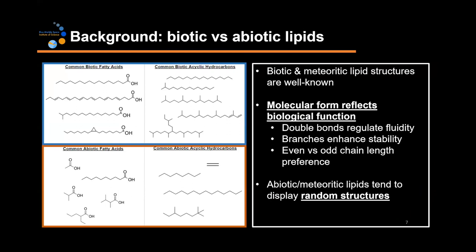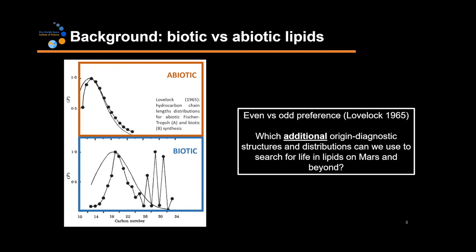For life, molecular form reflects biological function. You can see some common biotic fatty acids and acyclic hydrocarbons in the blue box. Things like double bonds are synthesized by organisms to help regulate membrane fluidity, while incorporating branches into these structures can enhance stability. A preference for even or odd chain lengths reflects how they're synthesized. On the other hand, meteoritic lipids, which you can see in the orange box, tend to have shorter chains and more random structures. This idea of looking at physical parameters in organic molecules as a sign of life was first proposed by James Lovelock in 1965. He noticed that the distribution of chain lengths for acyclic hydrocarbons tends to follow a Poisson distribution for abiotically synthesized molecules, but for biotic systems you see an even versus odd chain length preference, which is a clear indication of life.